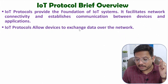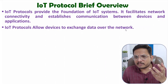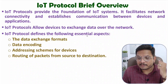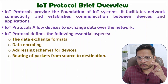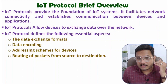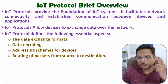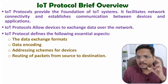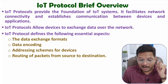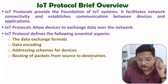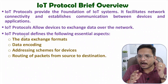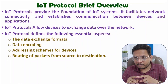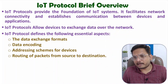IoT protocols allow devices to exchange data over the network — on the internet we are exchanging the data. IoT protocols define the following essential aspects. First one is data exchange format — in which format we exchange the data, that is defined by IoT protocol. Like IPv4 can be used, IPv6 can be used at the network layer. At the data link layer, you can have protocols based on Ethernet or token ring protocol. Data encoding schemes are also defined at IoT protocols. Addressing schemes for devices is also defined at IoT protocols. And routing of packets from source to destination is also defined at IoT protocols — routing means what will be the path for transfer of data, which is very essential when it comes to the internet.